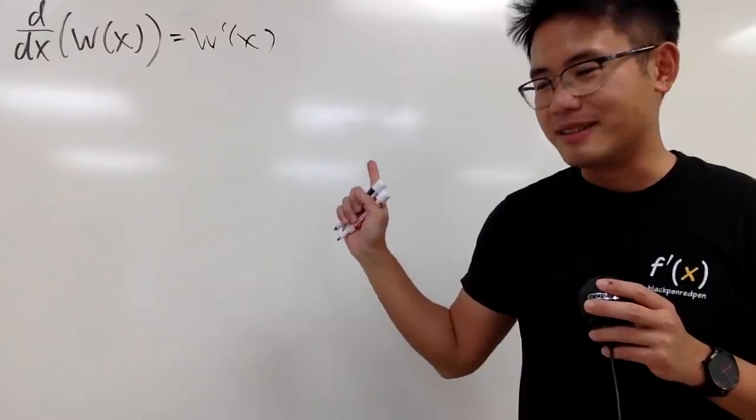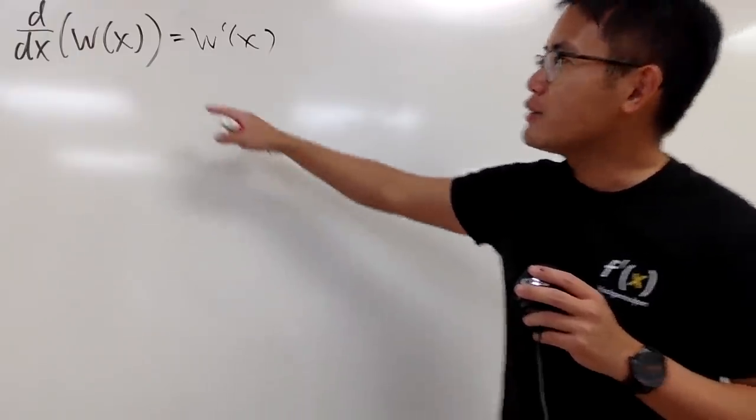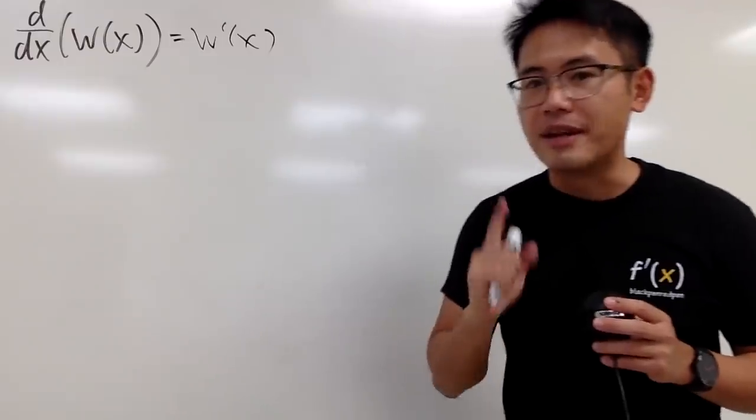No, we can actually do much better than that. This is so cheating, isn't it? We can actually write the derivative of W of x in terms of W of x itself, and let me show you how.